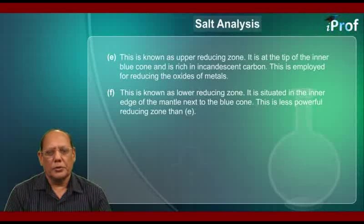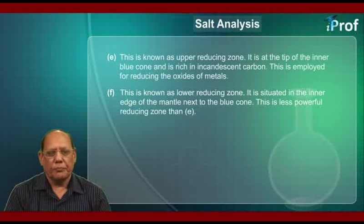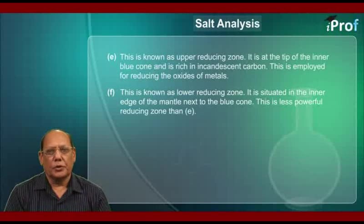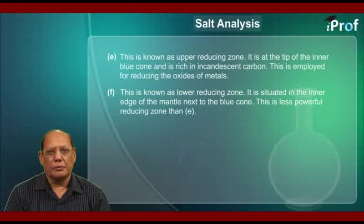E is known as the upper reducing zone. It is at the tip of the inner blue cone and is rich in incandescent carbon. This is employed for reducing the oxides of metals. F is known as the lower reducing zone. It is situated in the inner edge of the mantle next to the blue cone, and is a less powerful reducing zone than E.